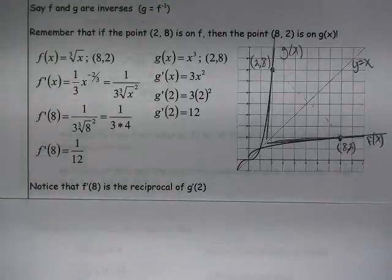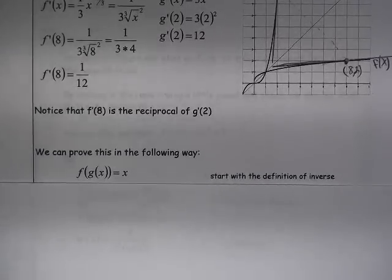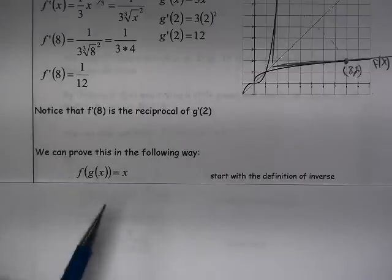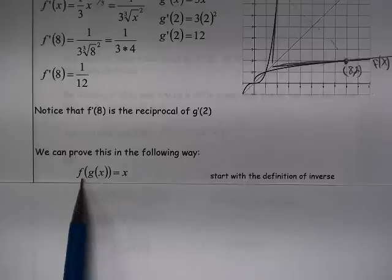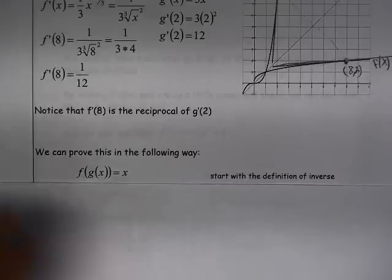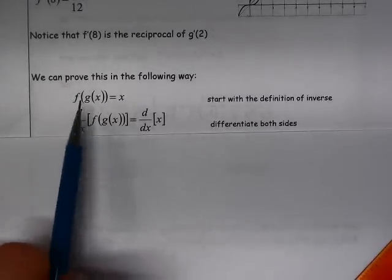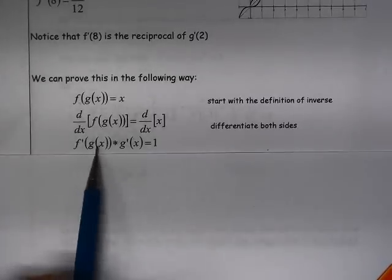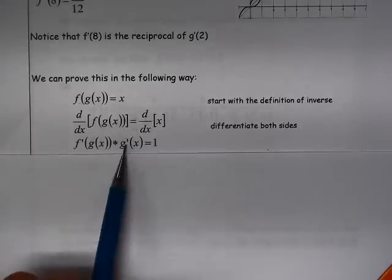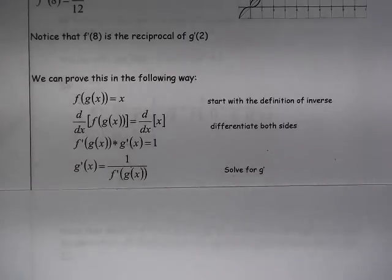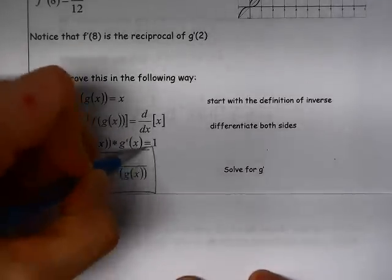So we can show this algebraically using calculus if we think about the definition of an inverse. f of g of x equals x. This is really half the definition. If these two are inverses then f of g of x is going to give me x. Now if I differentiate both sides of that, on this side here this looks just like the definition of the chain rule. So it's f prime of g of x times g prime of x, and the derivative of x is just one. Now if I solve for g prime of x, I get g prime of x equals one over f prime of g of x. This is really the formula that we're going to use as we work through it.